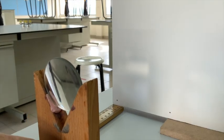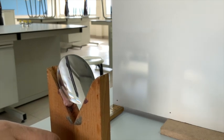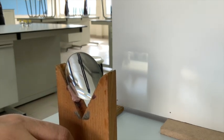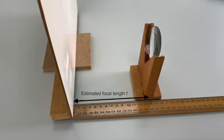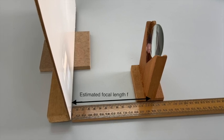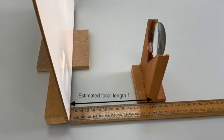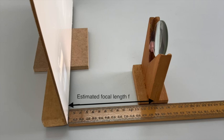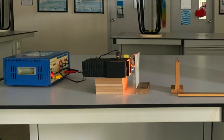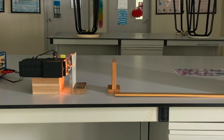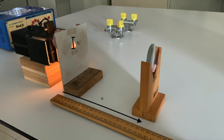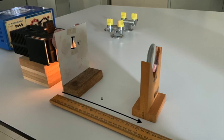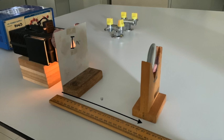Procedure 1: Use the convex lens to focus a distant object outside the laboratory on a screen. The distance between the screen and the lens is the estimated focal length of the lens. Measure and record the height h0 of the triangular slit on the cupboard. So this is the height of the object for this experiment.